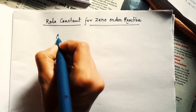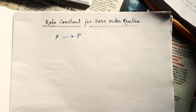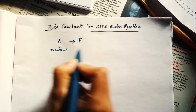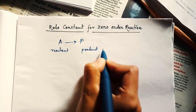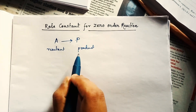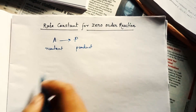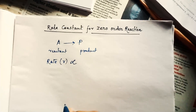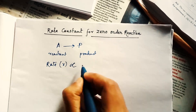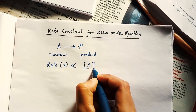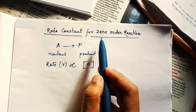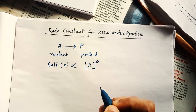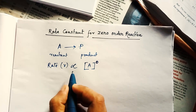Let's first write one equation. Suppose A is the reactant and P is the product. If we consider this reaction as a zero-order reaction, then the rate of this reaction will be proportional to the concentration of the reactant — and since it is zero-order, the power of the concentration of the reactant is zero.